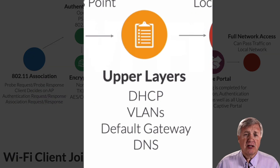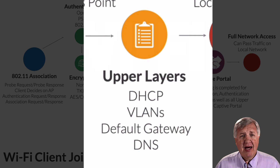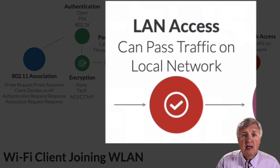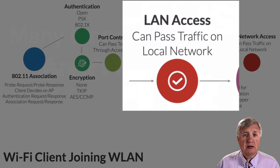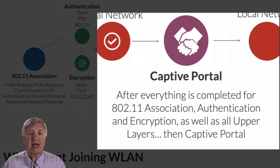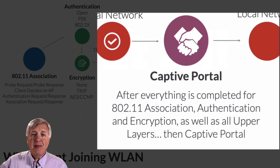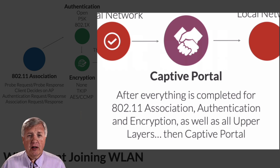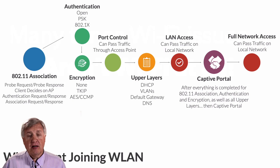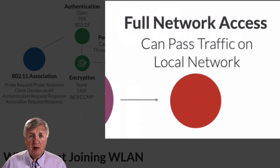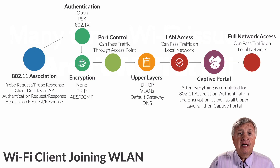Usually what happens next is there's a DHCP request, and in the DHCP response they get a VLAN assignment, an IP address, a subnet mask, and some DNS information. At that point the client device can access local network resources, one of which may be a captive portal. You have to first accomplish 802.11 association, authentication, encryption, pass port control, do a DHCP, get an IP address back, and then the captive portal is triggered. After the captive portal is cleared, if you have one, then you have full network access.